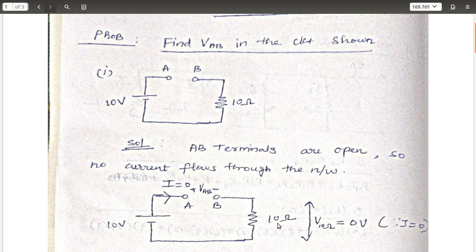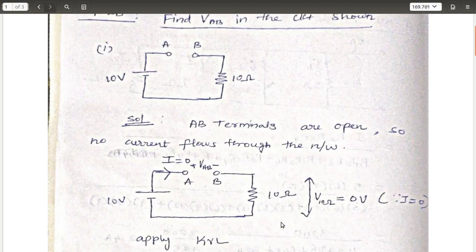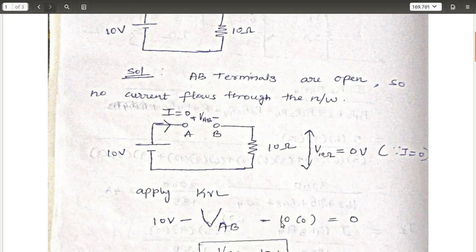So V equals I into R, so 0 into 10, V across the 10 ohm resistor is 0. This voltage is applied at the terminal, so this is VAB, which is the open-circuit voltage.